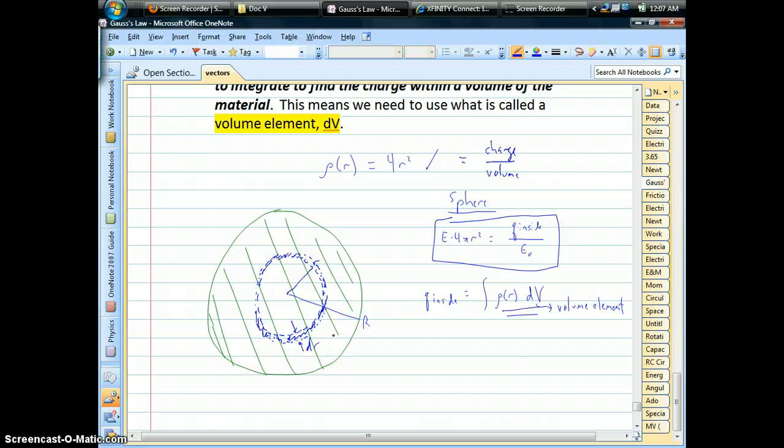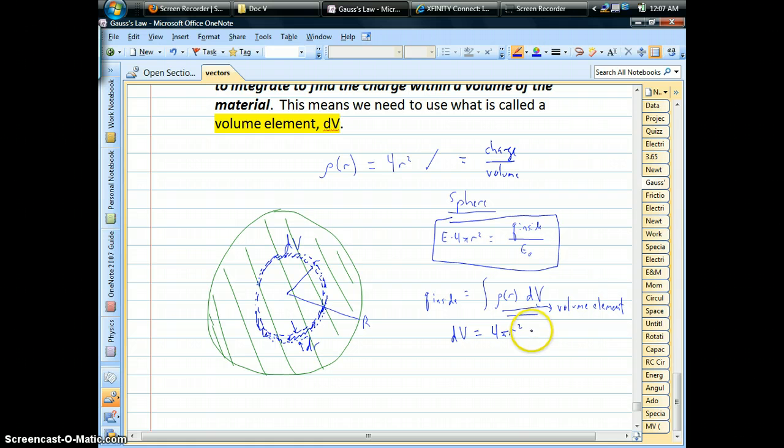So the question becomes what the volume of this thing is what we're calling dv. So within this tiny little volume if we multiply that volume by the density function that should tell us how much charge is inside that tiny little volume. And so what dv is in the spherical case, well that shell is going to have some surface area 4 pi little r squared but then it has thickness. So surface area times thickness would be volume. That's our volume element.